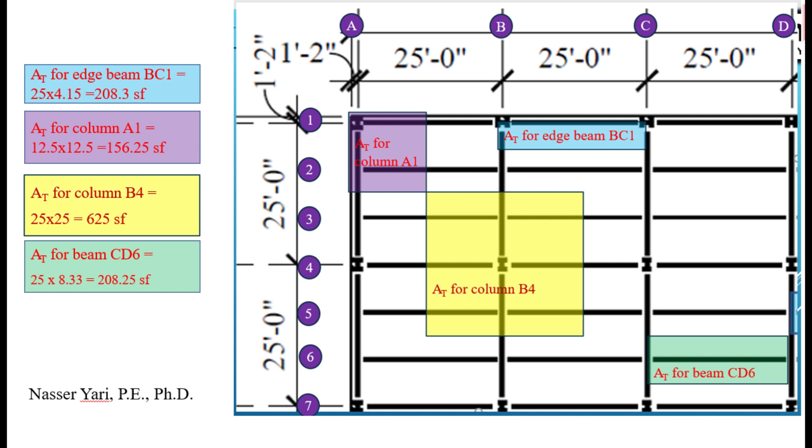Moving on over to find out the tributary area for beam BC1. That's the edge beam. There's nothing outside of it, therefore the only area in front of it that is going to carry the load is between that beam and the next beam over, which is beam BC2. And the difference between them is halfway between, and about 12.5 feet.